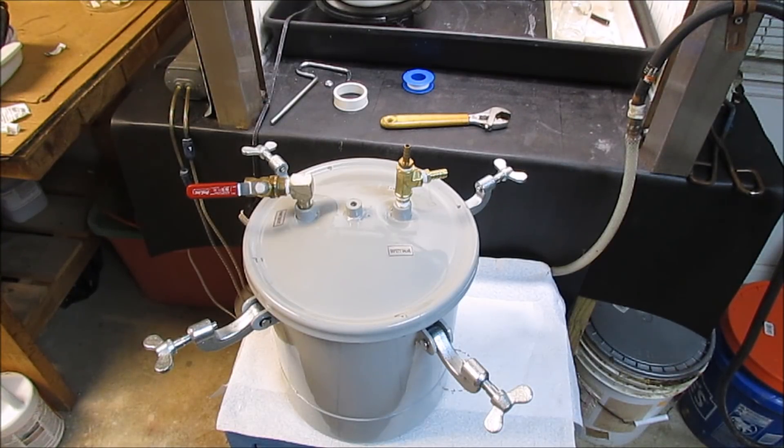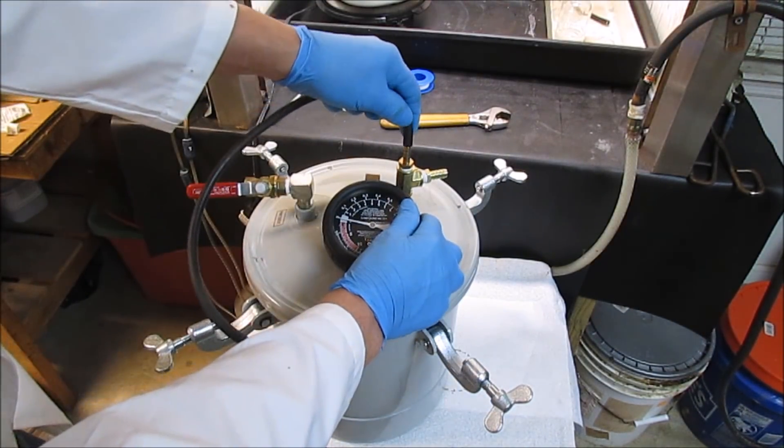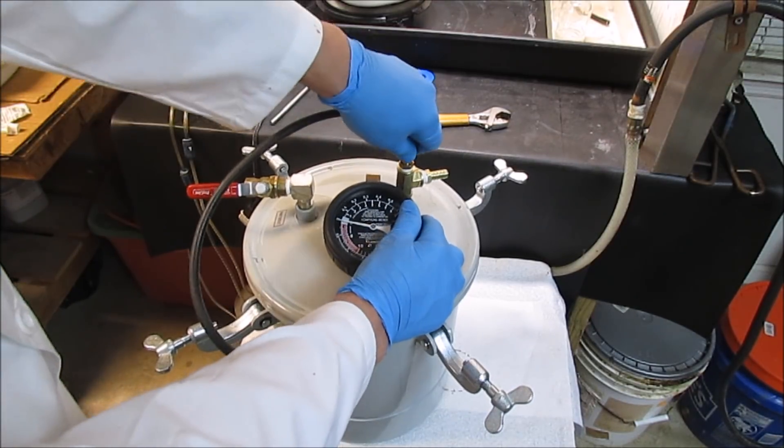Now I'll connect the gauge. Hook up the vacuum line. Tighten everything down and shut the valve. And we'll run a test on this thing. I borrowed the gauge off of my filter flask, my filtering table over there.